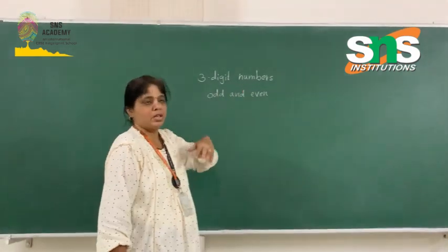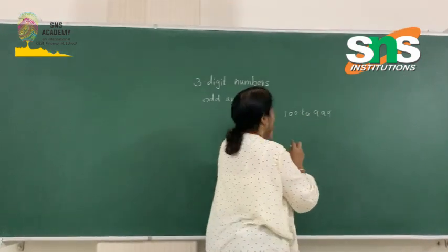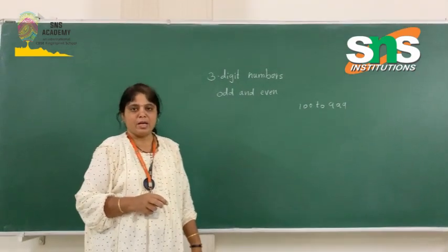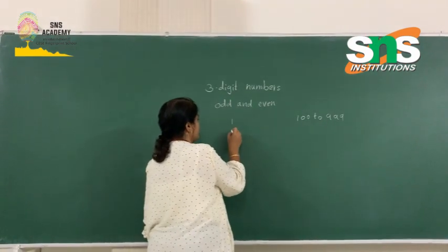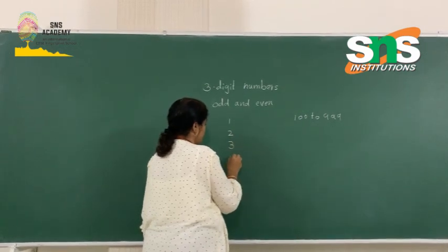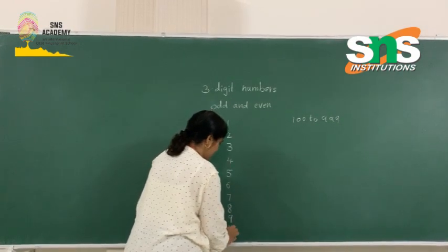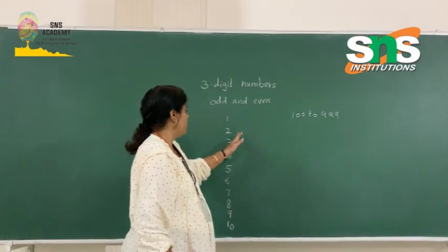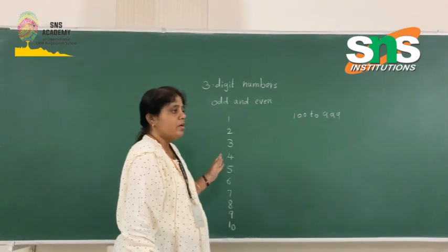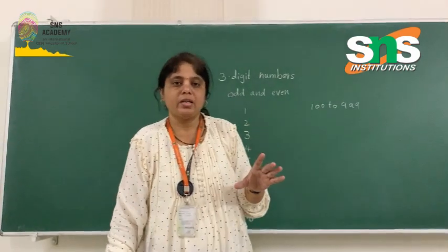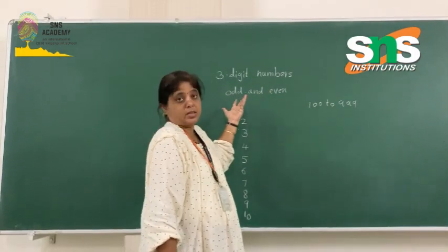So, the three-digit numbers are from 100 to 999. Now, odd and even numbers — how do we find them? If you take the single-digit numbers, I will write the numbers from 1 to 10: 1, 2, 3, 4, 5, 6, 7, 8, 9, 10. The numbers which we can make into a pair are called even numbers. The numbers where you can't make a pair are called odd numbers.